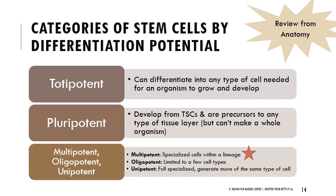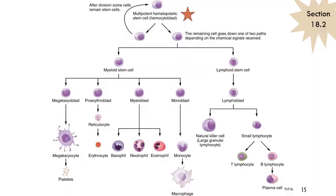When thinking about the formation of cells, consider stem cells. Very early in development, totipotent stem cells can differentiate into any cell type. Pluripotent stem cells have some limitations but still have broad potential. If a stem cell can only divide into cells within a certain lineage — such as blood cells — those are multipotent stem cells. All types of blood cells and their differentiation come from a type of multipotent stem cell called the hematopoietic stem cell, or hemocytoblast.